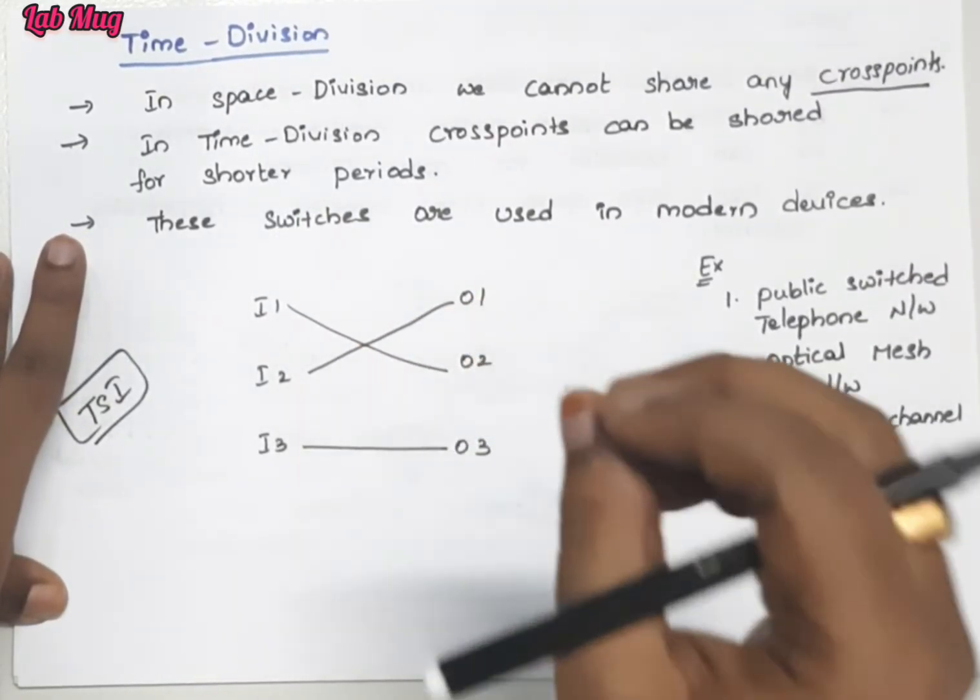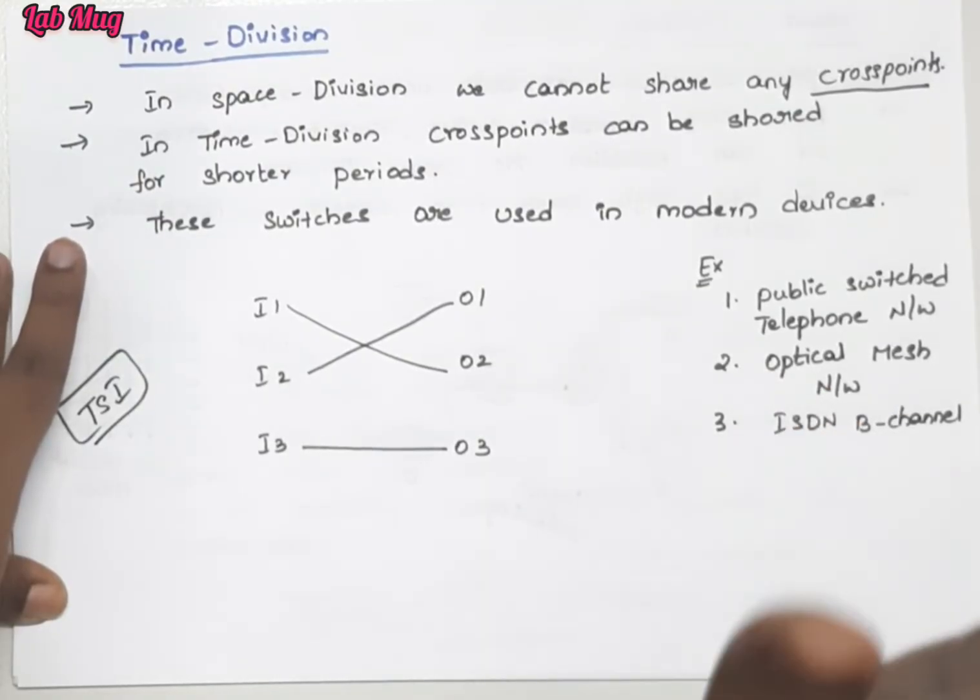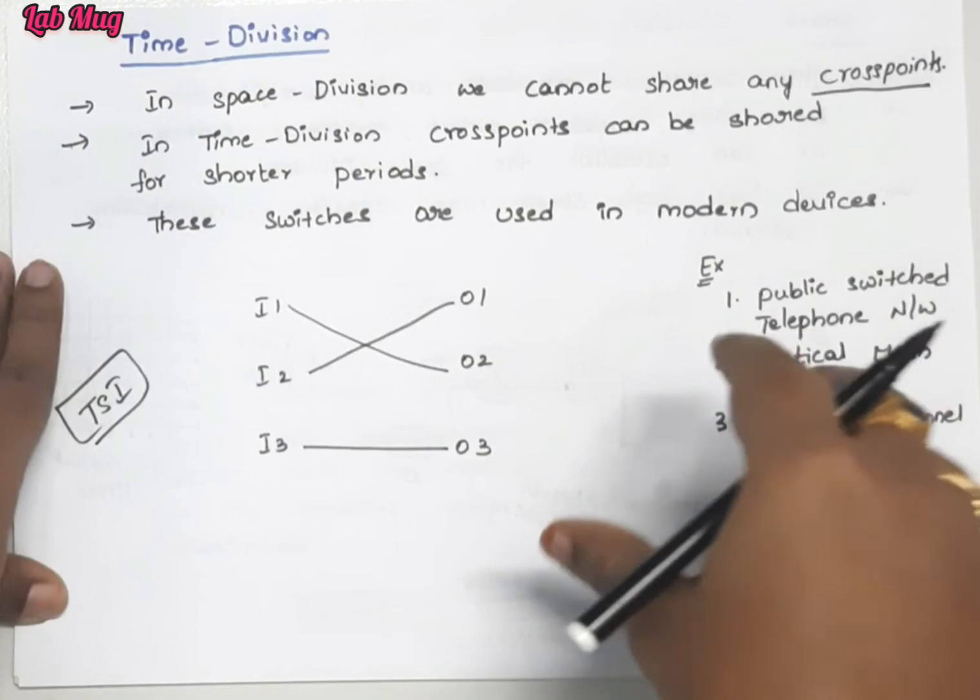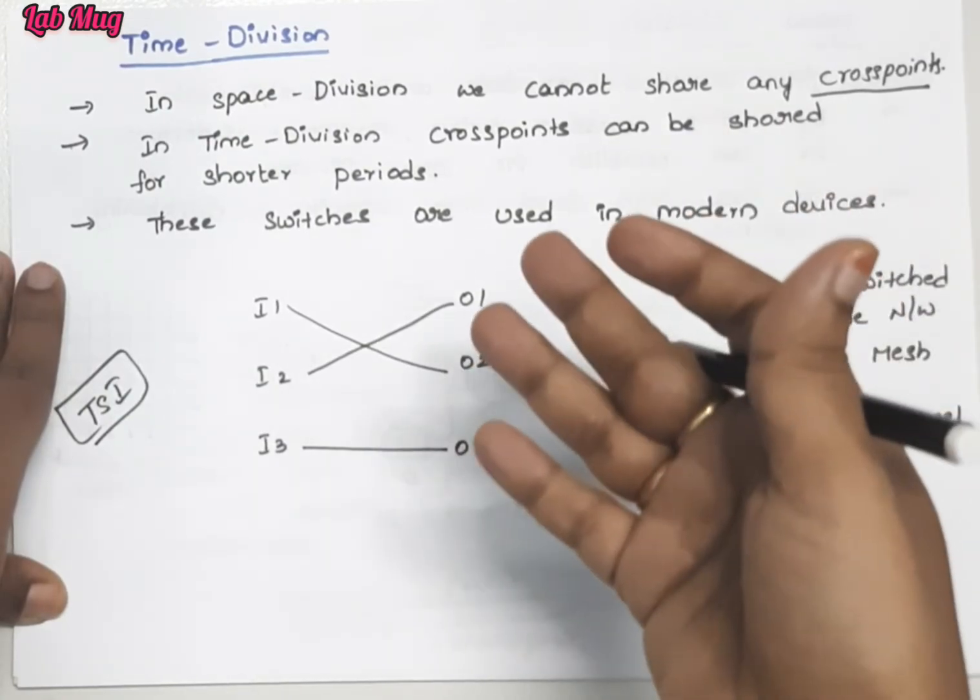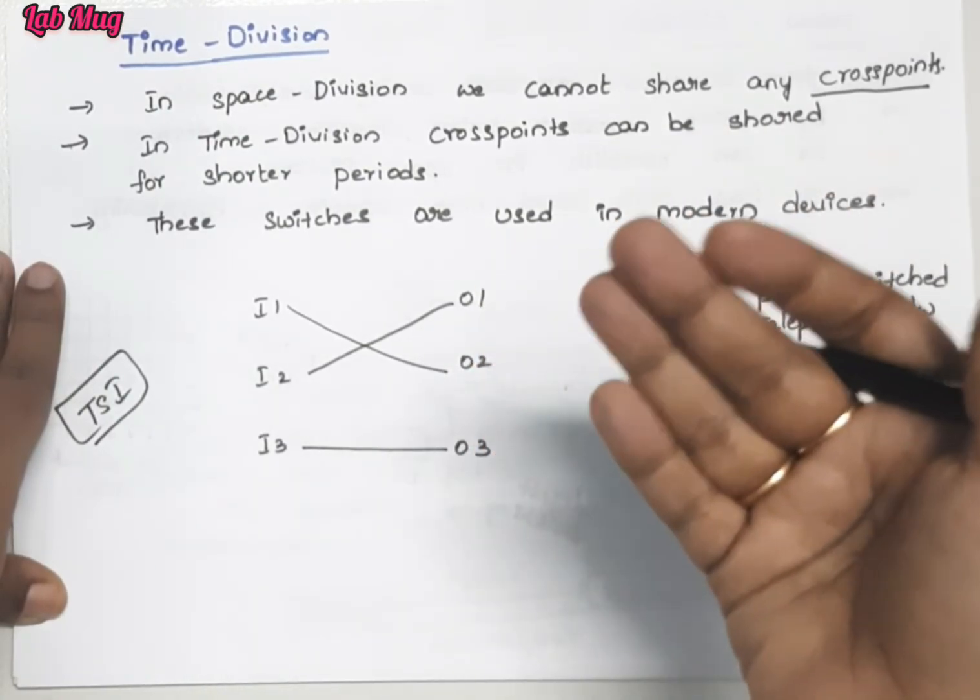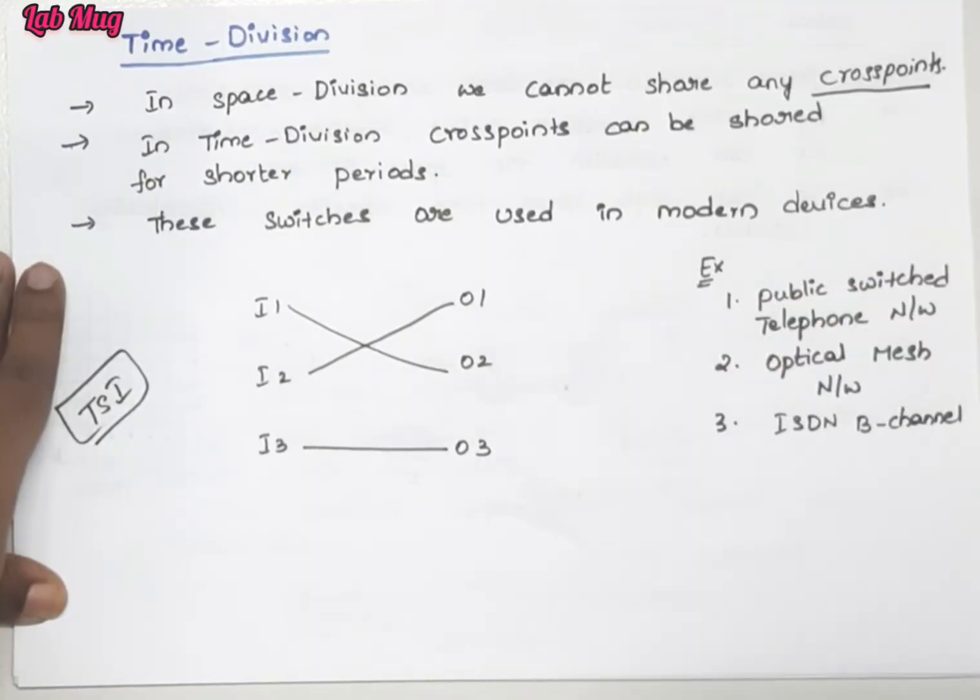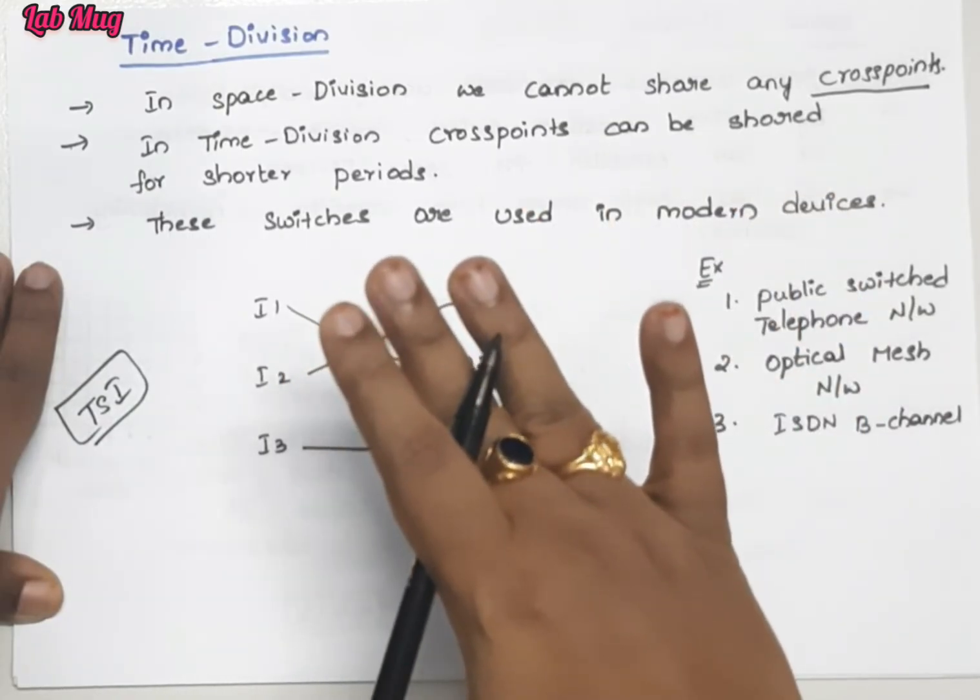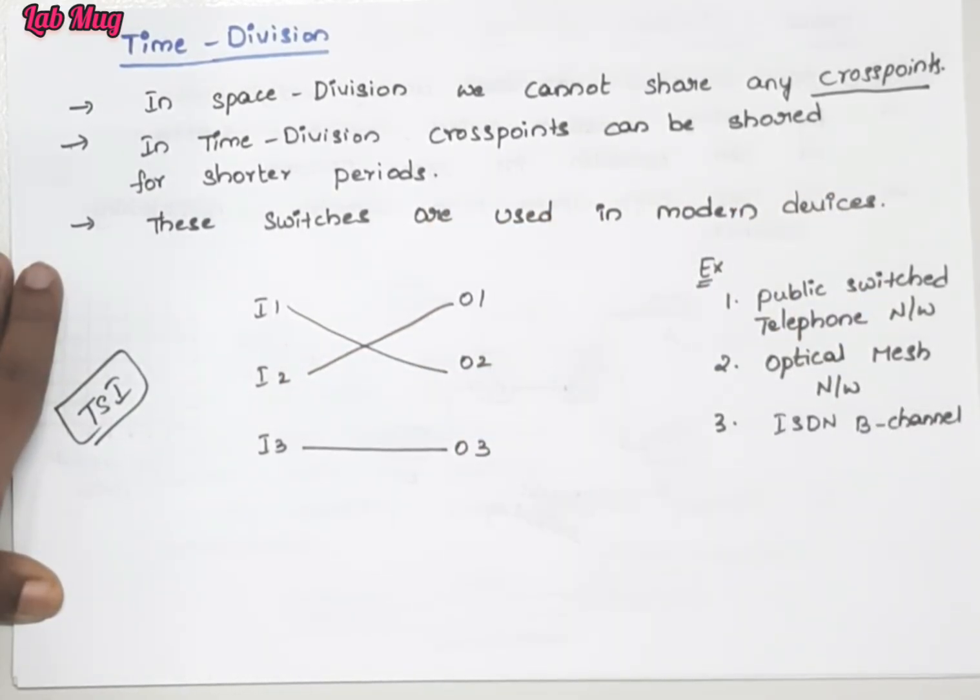In circuit switching, whether you use space division multiplexing or time division multiplexing, we mainly use it in public switched telephone networks and optical mesh networks. Where high-speed circuit switching data is used, in those situations we use it. As mentioned, in modern places we use time division, in old types we use space division. For both analog and digital access, we prefer space division.